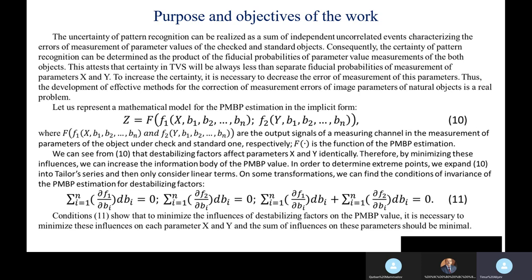Let us represent the mathematical model for the PMBP estimation in the implicit form, shown in expression 10, where F and f are the output signals of the measurement channel for the parameters of the object under check and standard one, respectively. F is the function of the PMBP estimation. We can see from expression 10 that the establishing factors affect parameters X and Y identically. Therefore, by minimizing those influences, we can increase the information border of PMBP value.